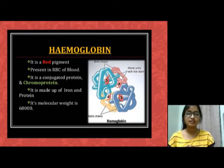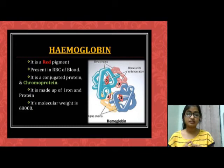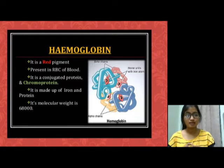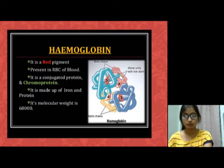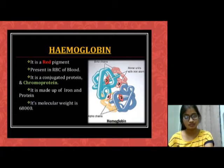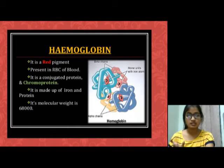Hemoglobin contains two chains: two alpha chains and two beta chains. Alpha chains contain 141 amino acids and beta chains contain 146 amino acids. Hemoglobin is a red colour pigment present in RBCs of blood. It is a conjugated protein and chromoprotein, made up of iron and protein, and its molecular weight is 68,000.